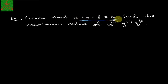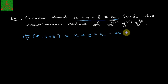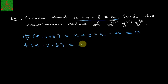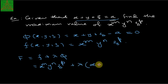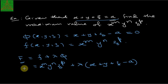Now we start solving this example. The given condition is x plus y plus z equals a, so phi of x, y, z is x plus y plus z minus a, which equals 0. The function f of x, y, z is x raised to m, y raised to n, z raised to p. We define F as f plus lambda times phi, which gives F equals x raised to m times y raised to n times z raised to p plus lambda times (x plus y plus z minus a).